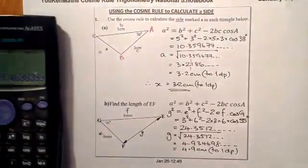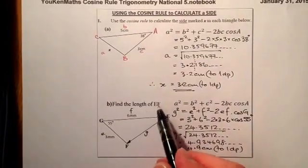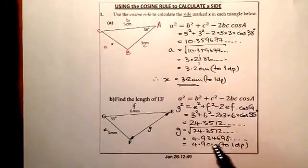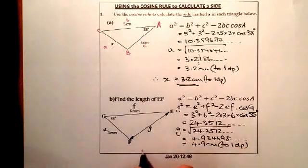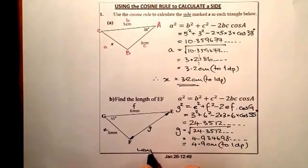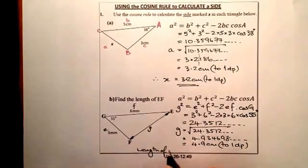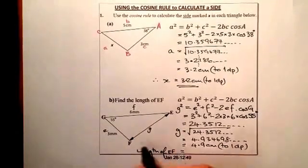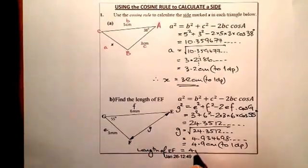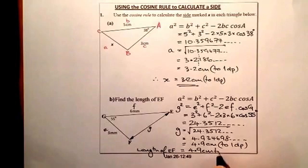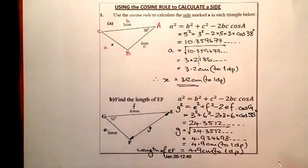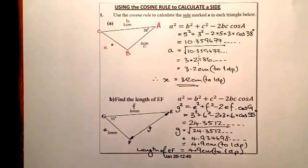So what we were asked in the question was for the length of EF. I've labelled it up with G, which should be okay, but let's go for the length of EF is equal to 4.9 centimetres to one decimal place, and that makes it crystal clear.